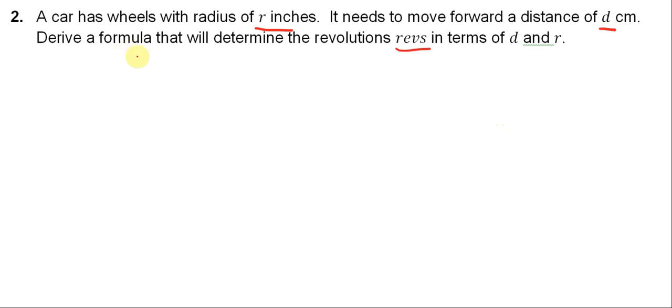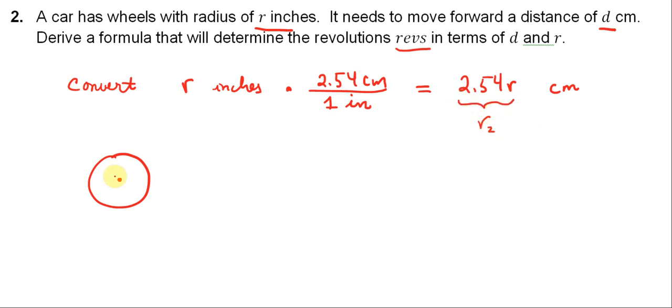Derive a formula that will determine the revolutions using the variable revs in terms of D and R. And again, the units are different, so the first thing we need to do is convert the units. So the radius here is R inches, but we need to convert it into centimeters. So R inches times 2.54 centimeters per one inch. So what we end up with here is 2.54R centimeters. Next, we need to talk about the distance that the wheel will travel. So let's say you have this, and maybe I should clarify this, we'll call this R2. So R2 is the radius in centimeters, which is equal to 2.54 times R.